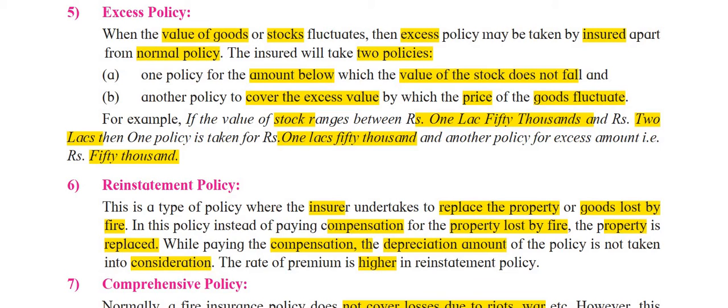The fifth type of fire insurance policy is the Excess Policy. We consider this policy when the value of goods or stocks fluctuates — meaning whenever the price or value of goods changes. When you take out insurance there is a price for the goods, and after a few months or a year when the price changes, an excess policy may be taken by the insured apart from a normal policy.